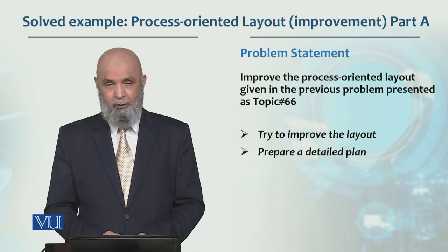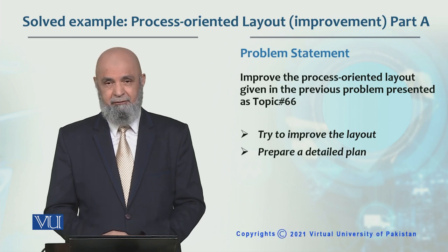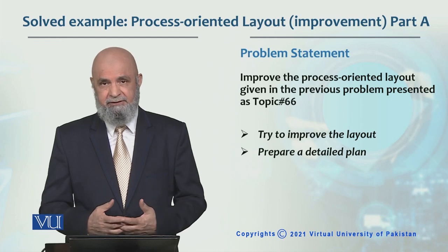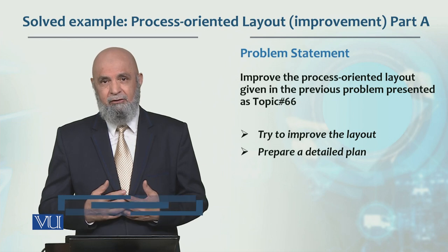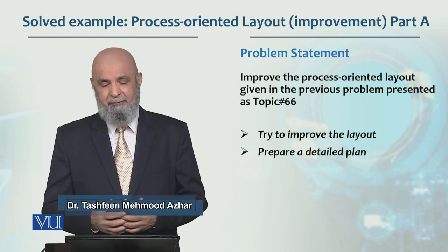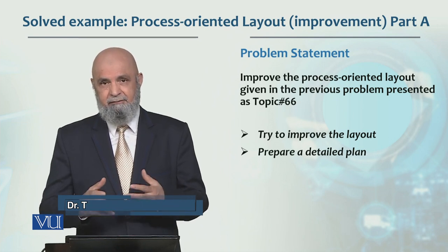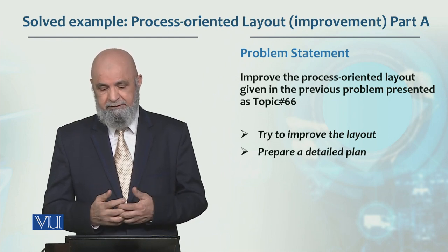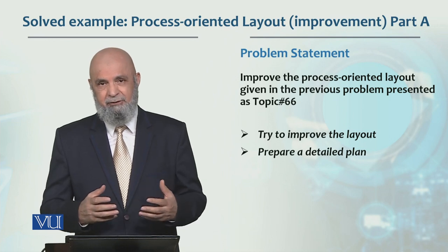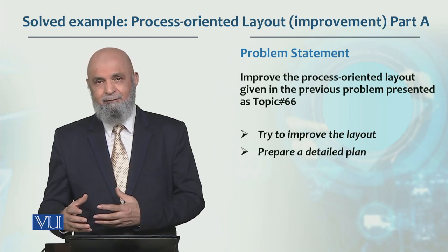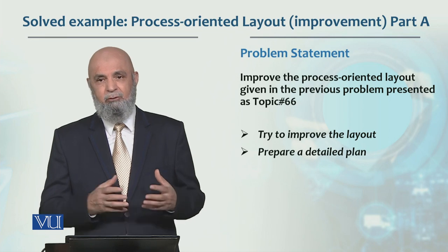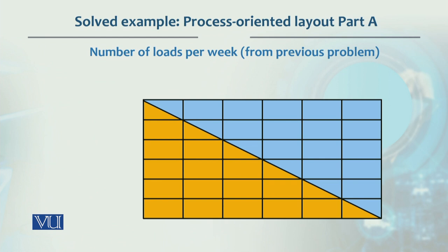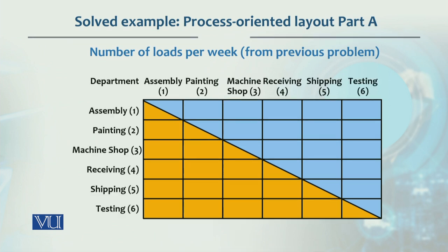Let's look at the problem we discussed earlier, which was the from-to matrix. We have to further improve the layout so that our total movement cost can be minimized. In that, we have two steps: improve the layout and then prepare the detailed plan to check whether the previous solution was better or not. We have 6 departments — assembly, painting, machine shop, receiving, shipping, and testing — and we have to calculate the from-to movements as shown here.